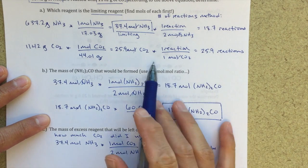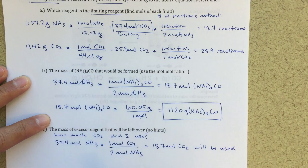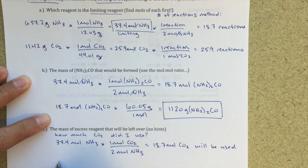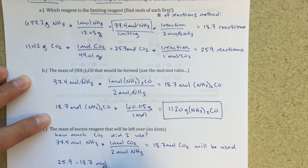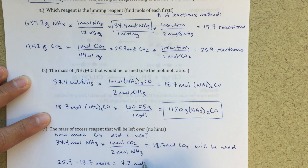So if I go back up here, I know that I started with 25.9 moles. So the excess moles is going to be 25.9 minus 18.7 moles, and that's going to be 7.2 moles of CO2 that is left over.